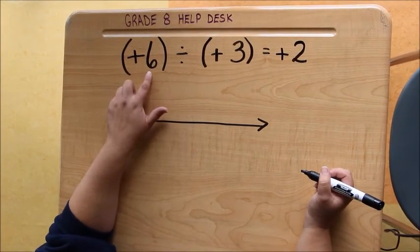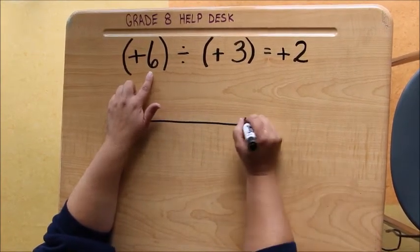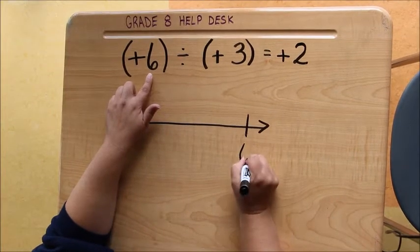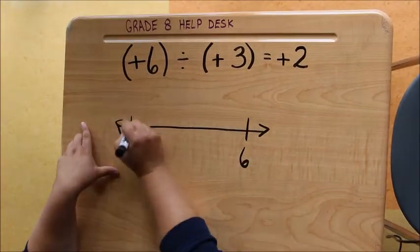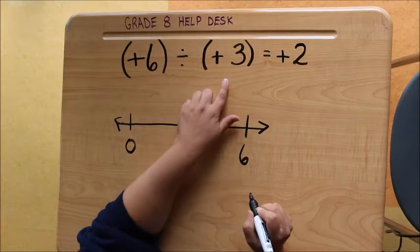We start with our dividend. This is always where you want to end up on your number line, so it will be the end point. And you start your number line at 0. Next you look at your divisor.